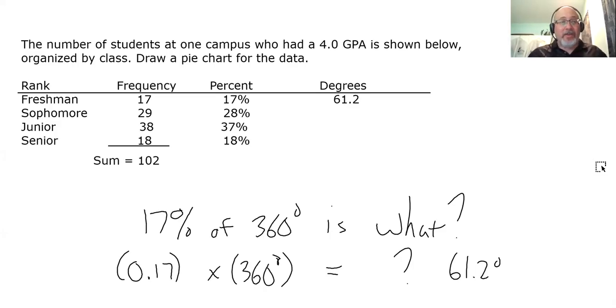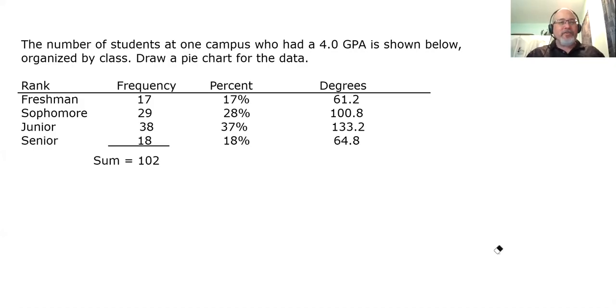All right, all we got to do is the same thing for the sophomores, the juniors, and the seniors, and we've done percents in the past, so I don't think it's worth our time right now to do all of them. All I have to do is to take this 17% here, and its corresponding decimal, and just in turn change it to 28%, 37%, and 18%. If you do that, here are the results that you will get. The sophomore slice of the pie chart will be 100.8 degrees. The junior slice of the pie chart will be 133.2 degrees, and the senior slice of the pie chart will be 64.8 degrees. That's great, but how do we measure those?